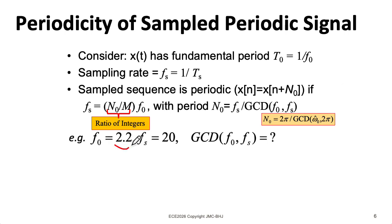For instance, suppose I have a signal with a frequency of 2.2 hertz and we sample it at a rate of 20 samples per second. The GCD of 2.2 and 20 is 0.02. If I take 0.2 and multiply it by 11, I get f₀. If I take 0.2 and multiply it by 100, I get fs.